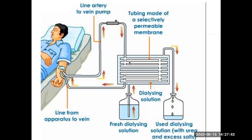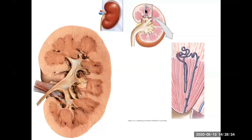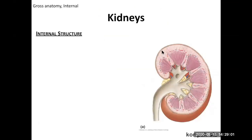Now for the kidney itself — the main filtration organ where blood comes in, gets filtered, and leaves. In cross-section, you can see distinct internal structures: a lighter outer area and darker inner areas corresponding to different functions. These structures reflect different functional regions visible both macroscopically and microscopically. The outer lighter region is called the renal cortex.